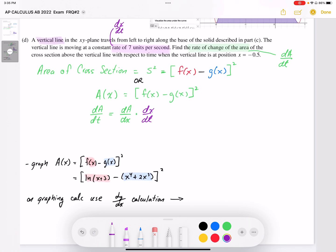So what I'm going to do is I'm going to graph the area function, which is f(x) minus g(x). So I'm going to graph this expression, ln(x+3) minus x^4 plus 2x cubed. And I'm going to square that because the difference represents the side length. Squaring it represents the area.